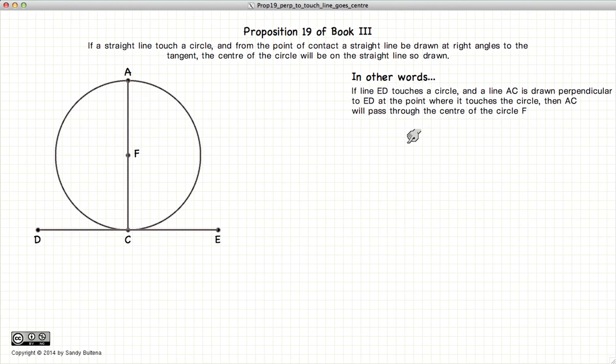This video presentation is going to be on Proposition 19 of Book 3, which states that if we have a circle and a line ED that touches the circle at point C, and if we construct from point C a line AC that is perpendicular to DE, so these two lines are perpendicular to each other, then AC will pass through the center of the circle F.